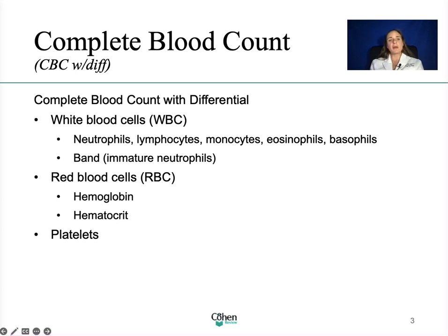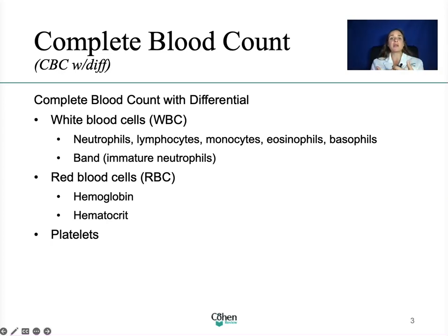If the white blood cell count is low, I like to think of it as occurring after infections — pretty much due to the usage of their white blood cells. If you use all of them, then the infection resolves, and there may be a low count as the body is trying to replenish. Cancer medications can cause neutropenia or leukopenia. Immune-related conditions like lupus can cause leukopenia — a little white blood cell count — and cancers certainly can as well.